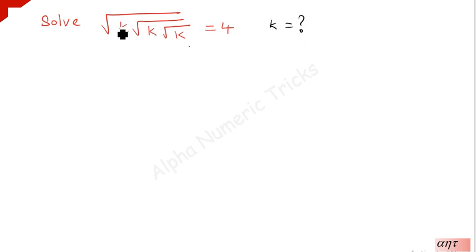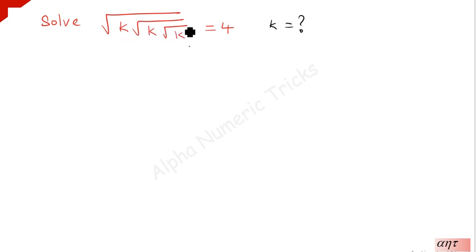What we have to do is just squaring on both sides 3 times. There are 3 square roots, so if you are squaring on both sides 3 times the square roots will be eliminated and you get the value of k. Now let's start doing that.